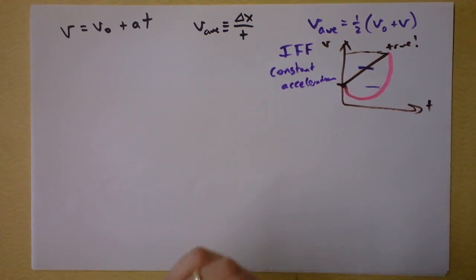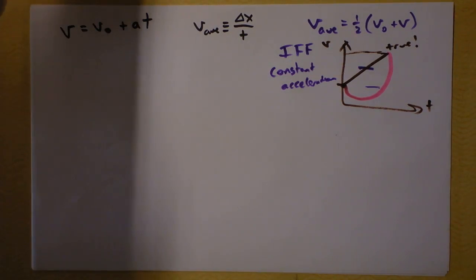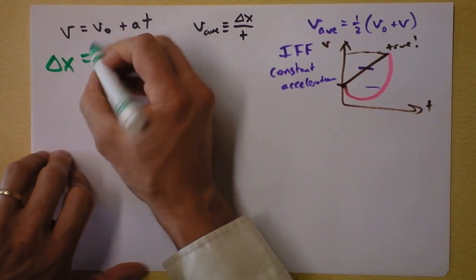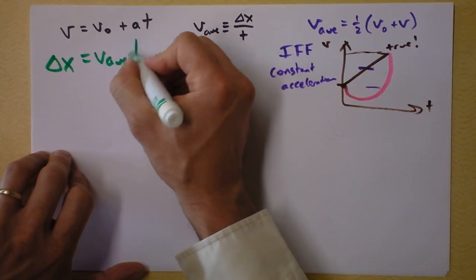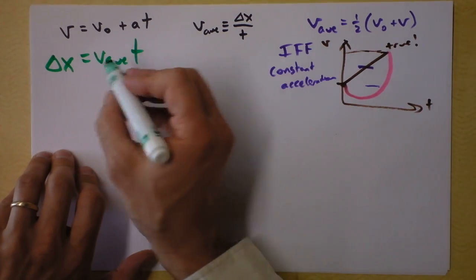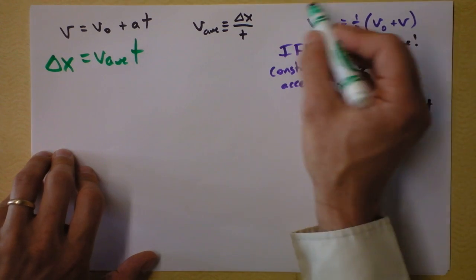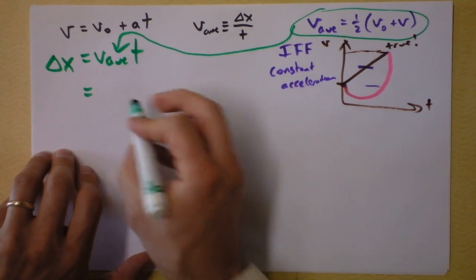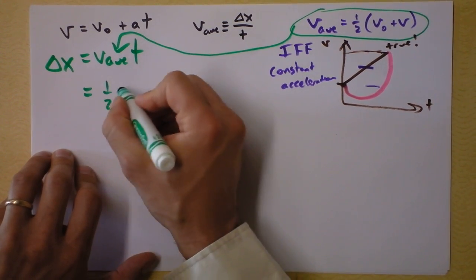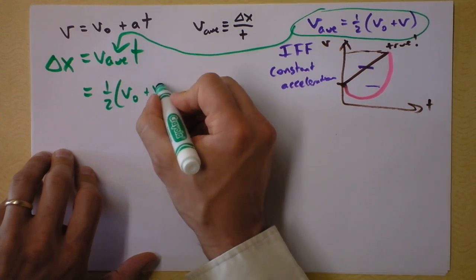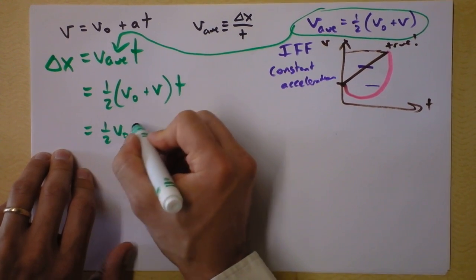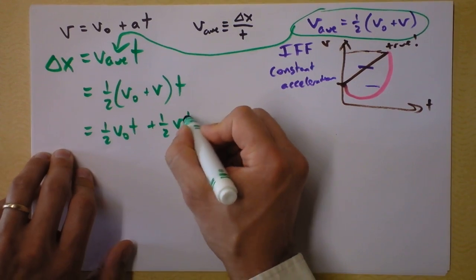With these three givens — two of them always true and one of them only true for constant acceleration — we can derive the classic. Let's do it mathematically. I start with the equation solved for delta x. Delta x is average velocity times time. Then I'm going to expand average velocity using the other equation, drag it in here for average velocity, and I have one-half the initial plus the final, multiplied by time.